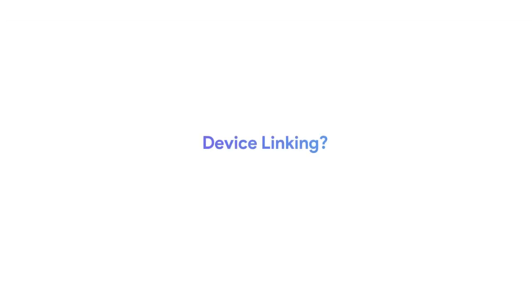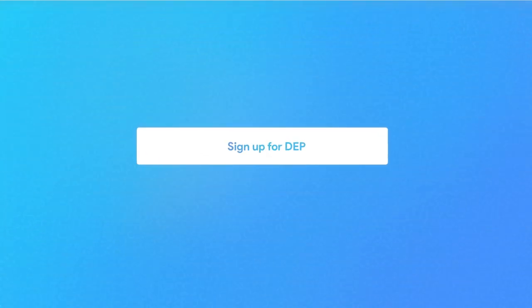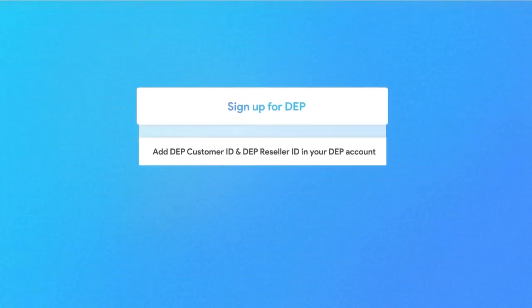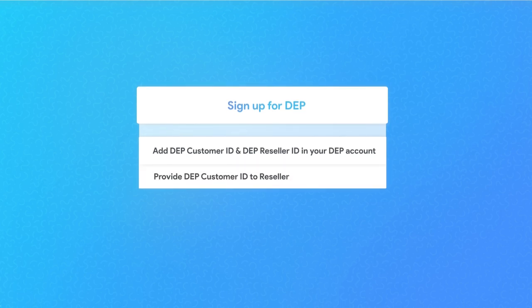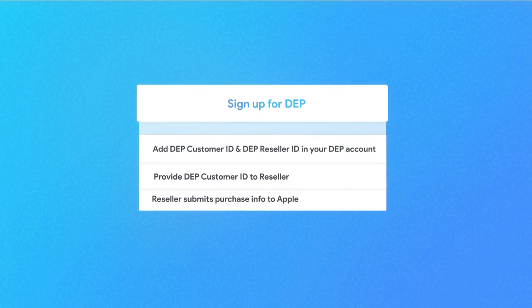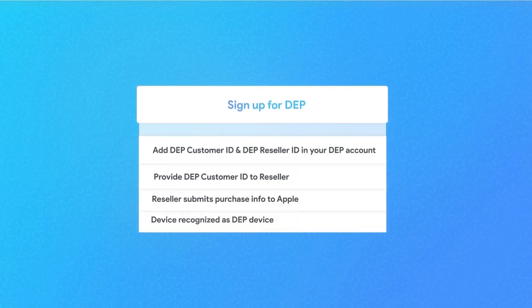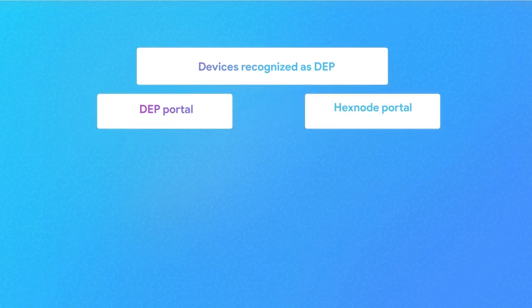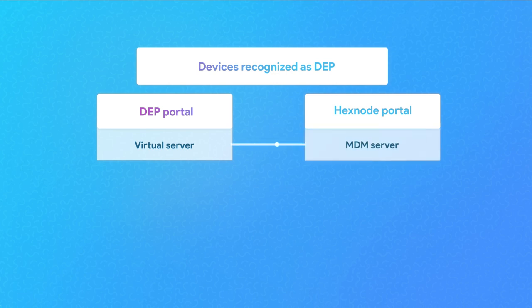How do the devices you purchased from carriers or resellers get linked to your company's DEP account? Just adding the DEP reseller ID won't associate your purchased devices to DEP. You'll need to provide your DEP customer ID to the reseller and have them submit your purchases to Apple DEP. Once Apple verifies the purchase information, your device is recognized as a DEP device. Once you have your devices recognized, you can set up virtual servers on your DEP portal, each synced to a different MDM server. You can add or remove devices and move them between these virtual servers, which automatically appear in the linked MDM.